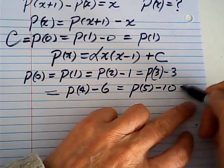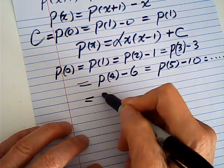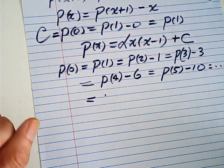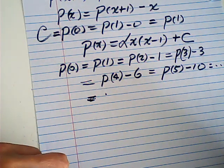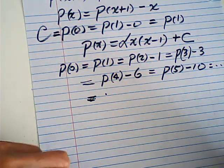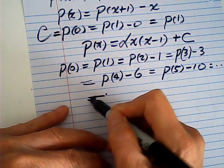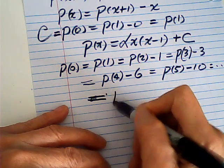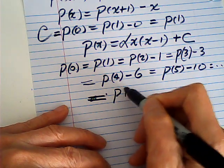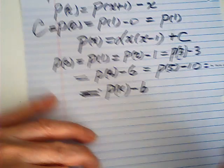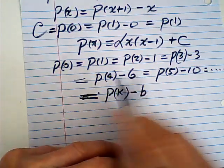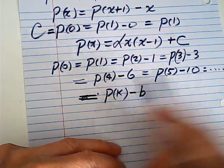And this will keep going on like this. Let me continue. Suppose this is P(K) minus a number. Well, that's the pattern, right? P of something minus a number.